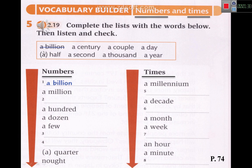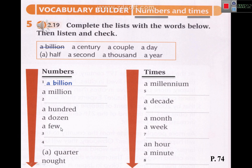About numbers: a billion, a century, a couple, a day, a half, a second, a thousand, a year. A billion is the biggest number, then a million. Less than a million — a thousand. Then a hundred, then a dozen. Less than a hundred — a few.